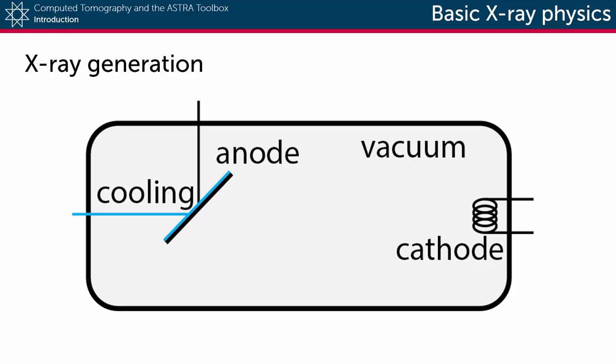When a high voltage is applied between the cathode and the anode, electrons are accelerated from the cathode to the anode and hit the anode at a very high speed.